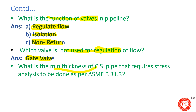The next question is: what is the minimum wall thickness of a carbon steel pipe that requires stress analysis to be done as per ASME B31.3? The answer is 19 mm. So any pipe with a minimum thickness of 19 mm requires stress analysis to be performed as per ASME B31.3.